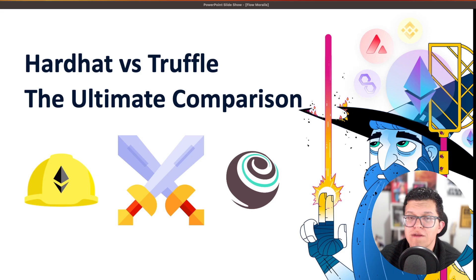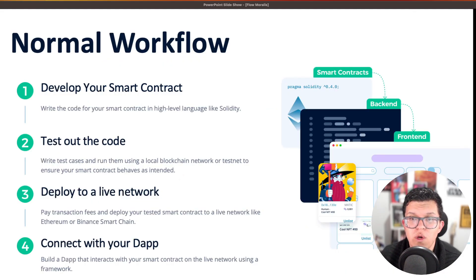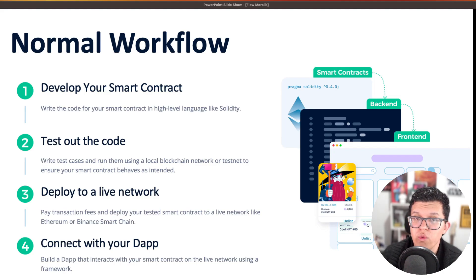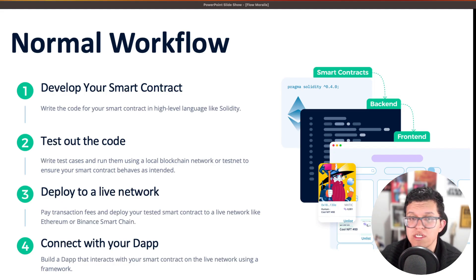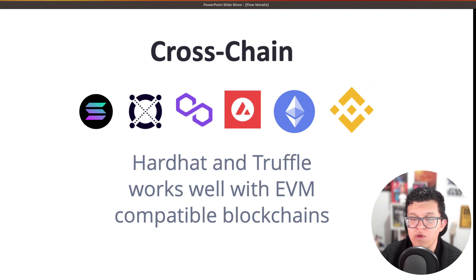Hardhat and Truffle are both popular frameworks for smart contract development. They are both based on JavaScript and have a lot of functionalities. When you're developing your smart contracts, you always go through this workflow: first, develop your smart contracts in a high-level language such as Solidity; test your code because you don't want bugs or security breaches; then deploy them to a live network, starting on testnets such as Sepolia and Goerli, then go to a live net such as Ethereum. Finally, you connect those deployed smart contracts to your dApp. Both Hardhat and Truffle can help you with that, as they are compatible with a lot of EVM-compatible blockchains.